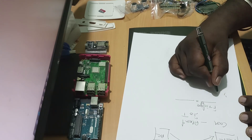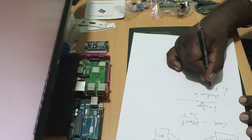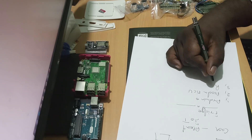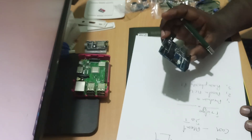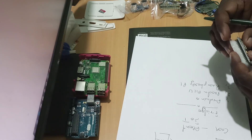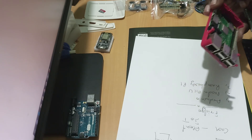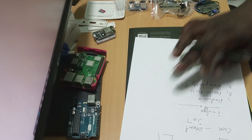IoT uses a microprocessor or microcontroller. You need to use the right IoT hardware. This is Arduino Uno. This is NodeMCU. Arduino and NodeMCU use a microcontroller. This is Raspberry Pi — it is a small computer with RAM, processor, and microprocessor. This is our IoT-related project.